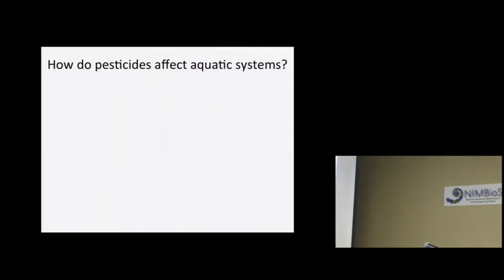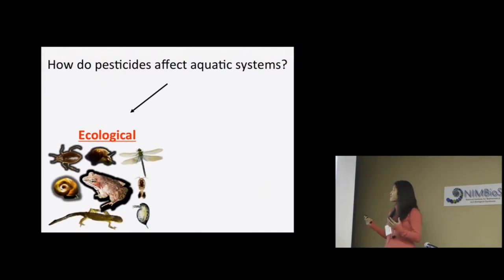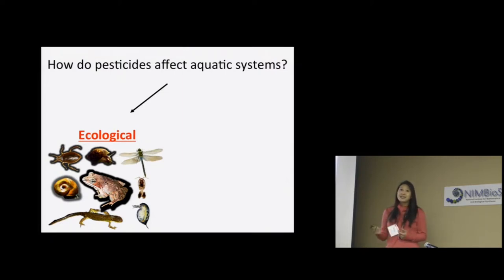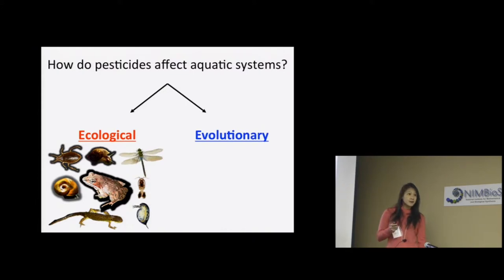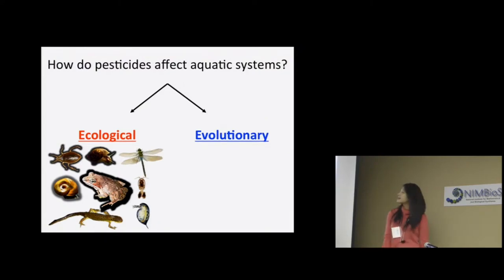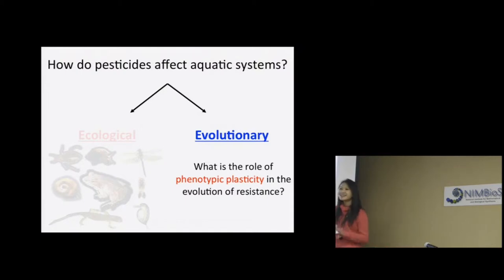Given that this is such a broad and interdisciplinary issue, I've structured my dissertation to integrate tools and theories from ecology, evolution, and toxicology to better understand how pesticides affect natural systems. I work primarily in aquatic systems and am interested in questions such as how do pesticides affect aquatic communities, species abundance, species diversity, and species interactions. I'm also interested in the evolutionary aspect — how can aquatic populations evolve resistance to pesticides. A lot of my work focuses on non-target species, but I think the ideas I'll present today are widely applicable to a number of different taxa.